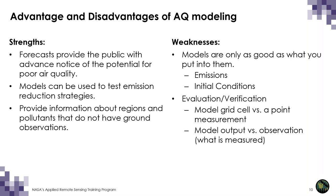Before reviewing the GEOS systems, a few words about the strengths of air quality modeling — specifically three-dimensional atmospheric models. Air quality forecasts can alert the public to potential poor air quality. Air quality models can test the effectiveness of different emission reduction strategies, and they can provide information about regions or pollutants that lack observations, which is particularly useful in rural areas without ground station observations and critical for studying chemical processes that help us understand pollution episodes.